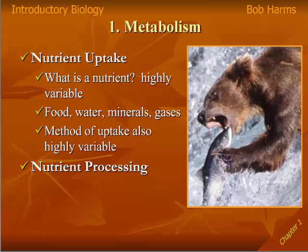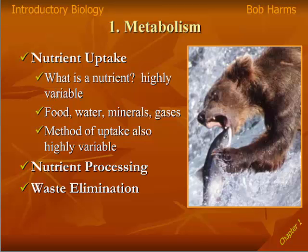Another metabolic characteristic is that once organisms have their nutrients, they process those nutrients through very complex metabolic or chemical pathways in cells. Maybe some nutrients are broken down and recycled, others are used for energy, and still others are saved for a different time. Finally, within metabolism, we also have elimination of waste. This nutrient processing generates lots of waste products, and living things have to be able to constantly remove those waste products — otherwise they may become toxic.